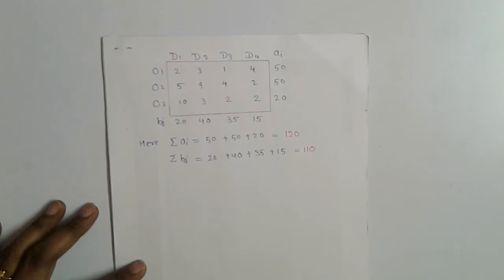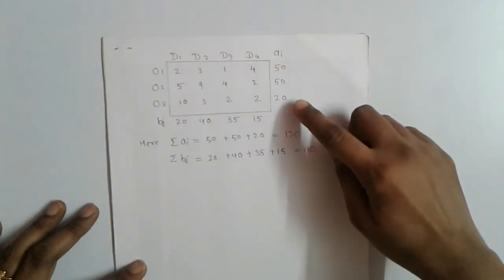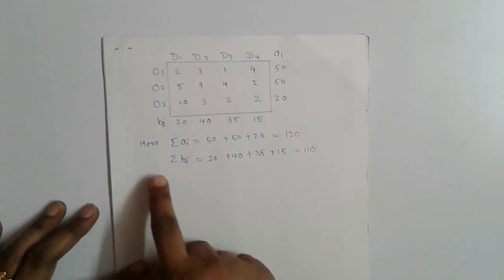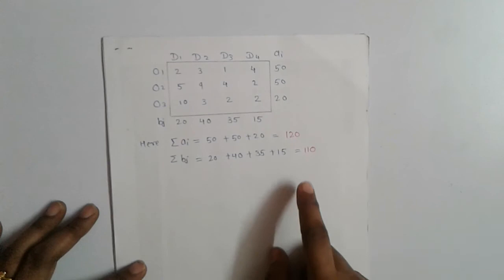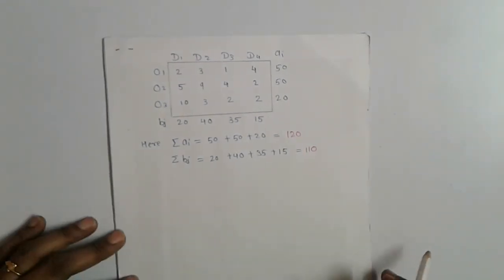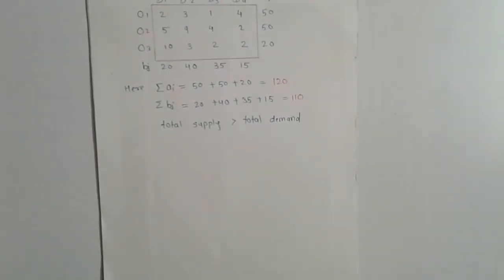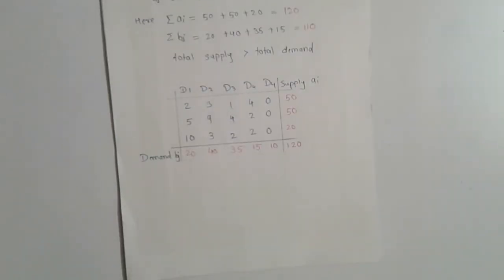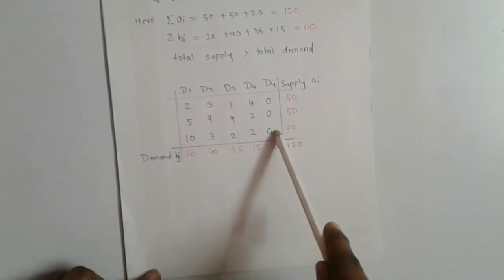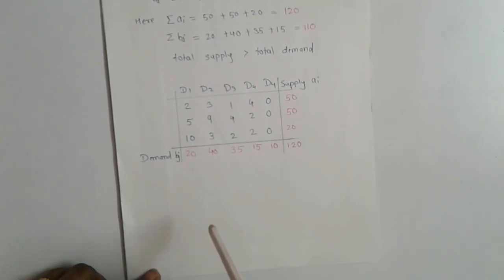Consider this example: in this transportation problem the total supply is 50 plus 50 plus 20 equals 120, and the total demand is 20 plus 40 plus 35 plus 15 equals 110. That means the total supply is greater than the total demand by 10 units. So to balance this problem we add a dummy column having transportation cost zero and demand of 10 units. Now the total demand is 120 and the total supply is also 120, therefore the problem becomes balanced.